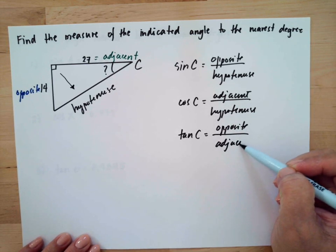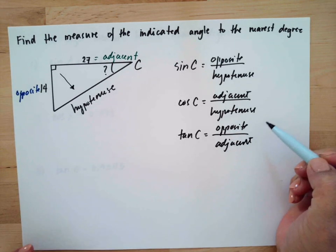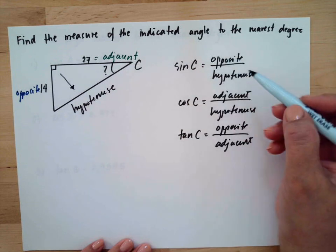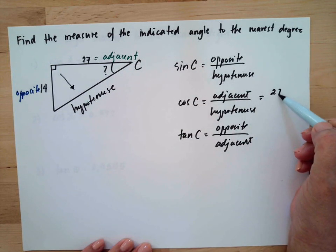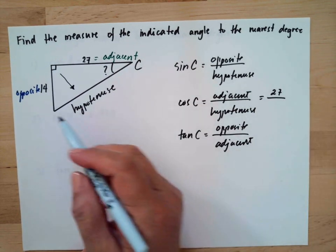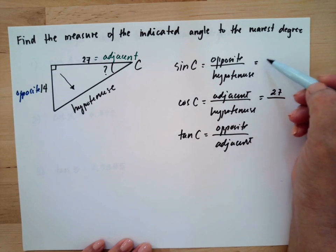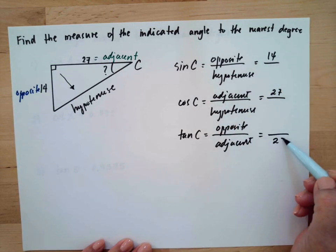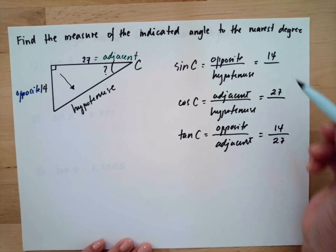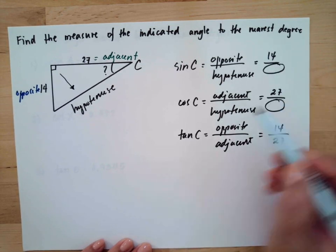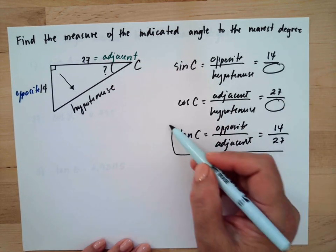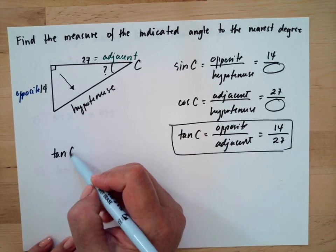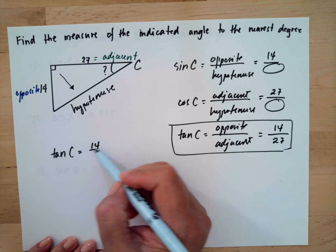Now identify the given: adjacent is 27, opposite is 14, and the hypotenuse is unknown. Therefore we can use the tangent function. Tangent C equals 14 over 27.